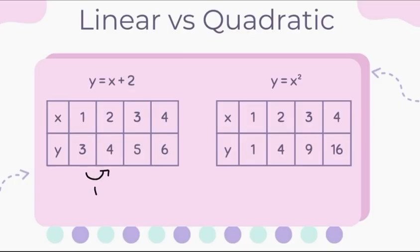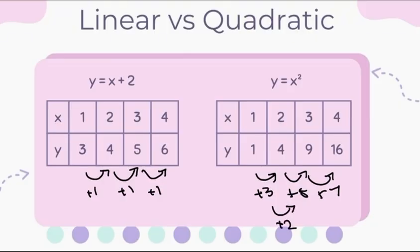For example, add 1 to every successive y value. This doesn't work for the quadratic, where all the differences are different. It would be plus 3, plus 5, and plus 7. However, the second differences are the same, meaning the difference between the first differences. Plus 2 and plus 2.